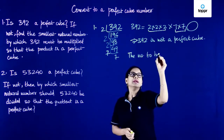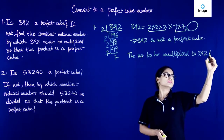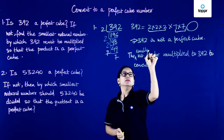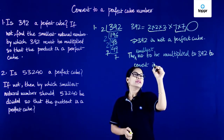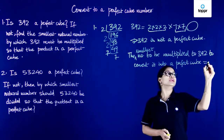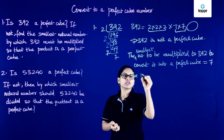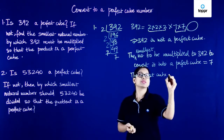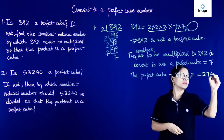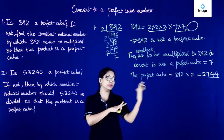The smallest number to be multiplied to 392 to convert it into a perfect cube is 7. So when we multiply by 7, 392 becomes a perfect cube. The perfect cube will be 392 multiplied by 7, which equals 2744. So 2744 is a perfect cube.